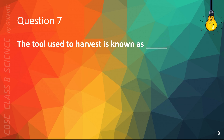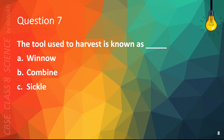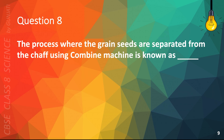Question 7. The tool used to harvest is known as: A. Winnow, B. Combine, C. Sickle, or D. None of the above. The correct answer is C. Sickle.